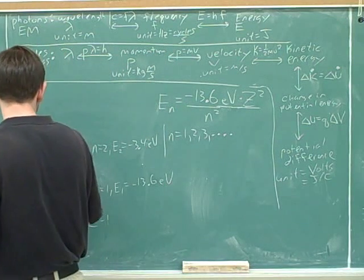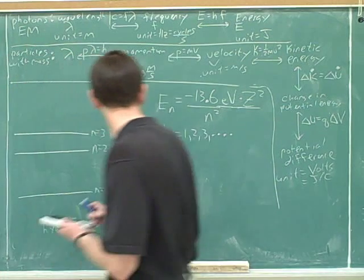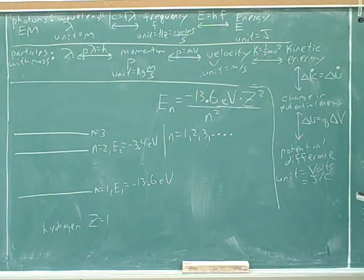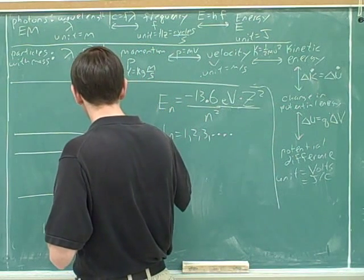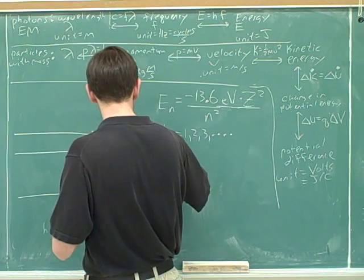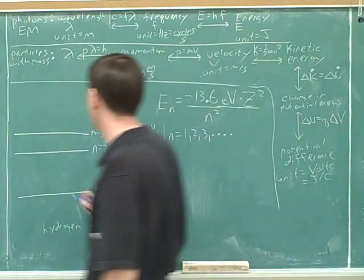Let's do N equals 3. Let's do N equals 3. Okay. So, let's do N equals 3. 1.5 electron volts, so now you're dividing by 3 squared, which is 9.